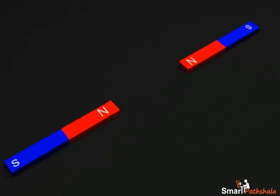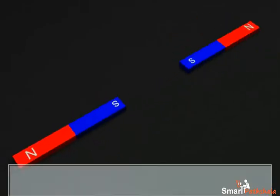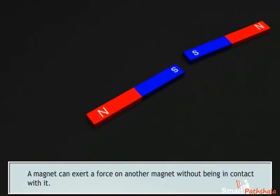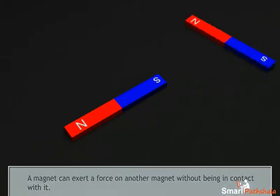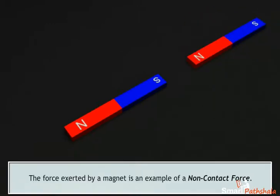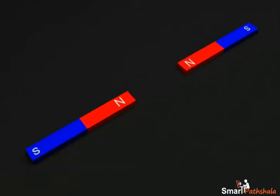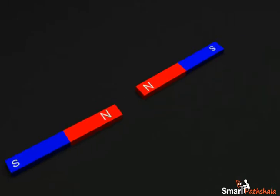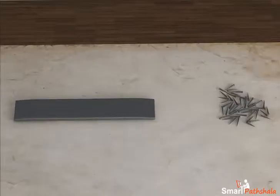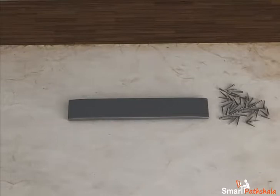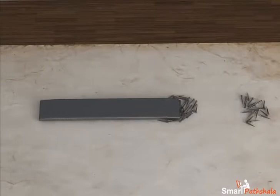A magnet can exert a force on another magnet without being in contact with it. The force exerted by a magnet is an example of a non-contact force, as the two magnets will not come in contact with each other. The force exerted by a magnet on a piece of iron, which is a ferromagnetic substance, is also a non-contact force.